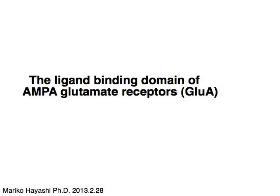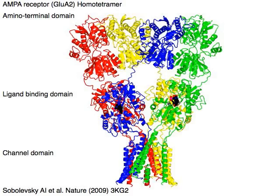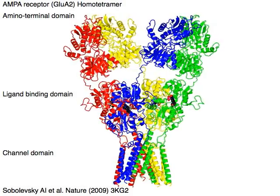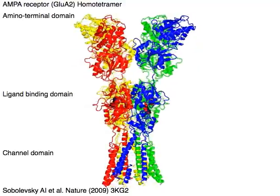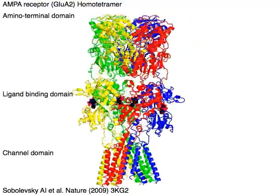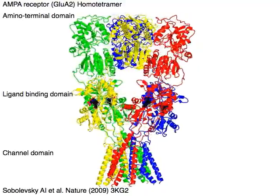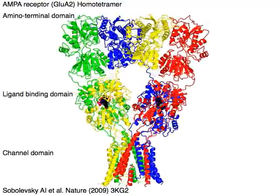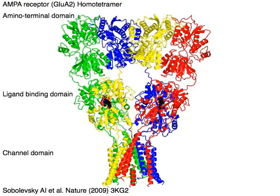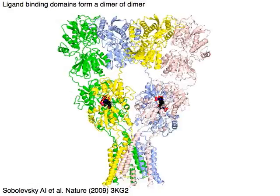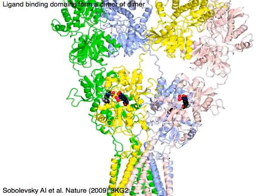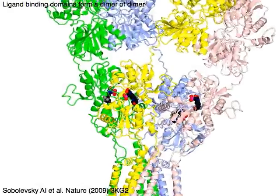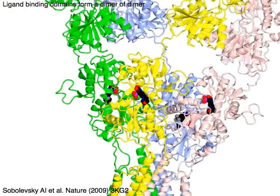The ligand binding domain of AMPA glutamate receptors, or GLU-A, AMPA receptor — specifically a homotetrameric structure of GLU-A2 — shown in four colors. The ligand binding domains form a dimer of dimers: a red-blue pair and a yellow-green pair.